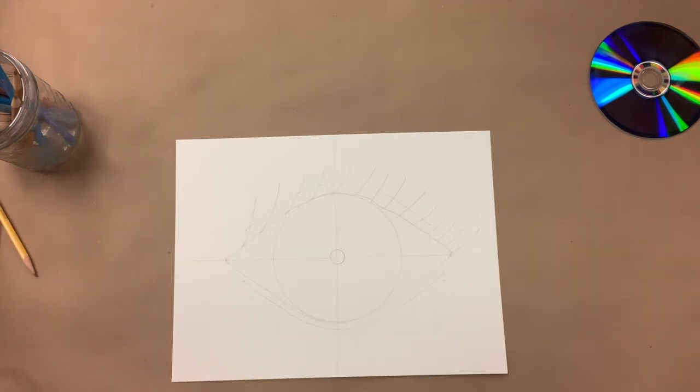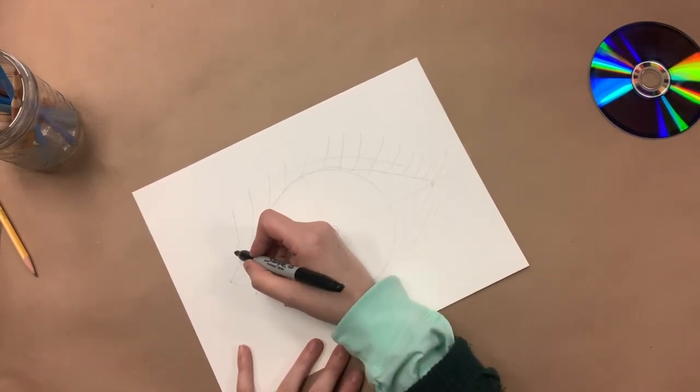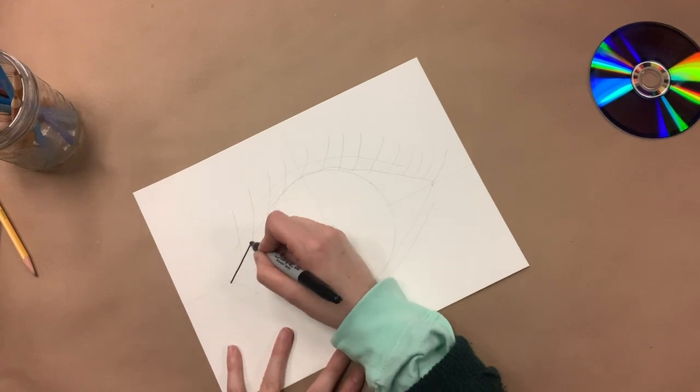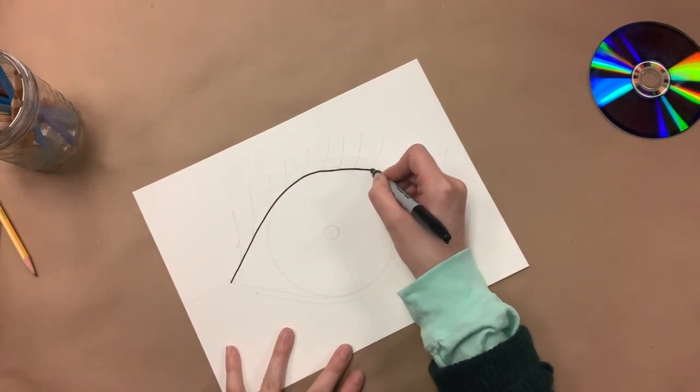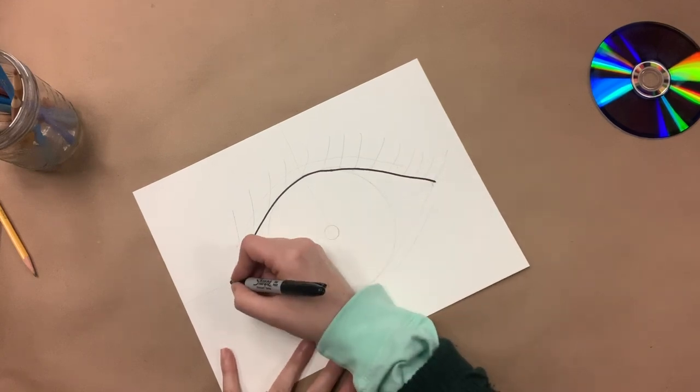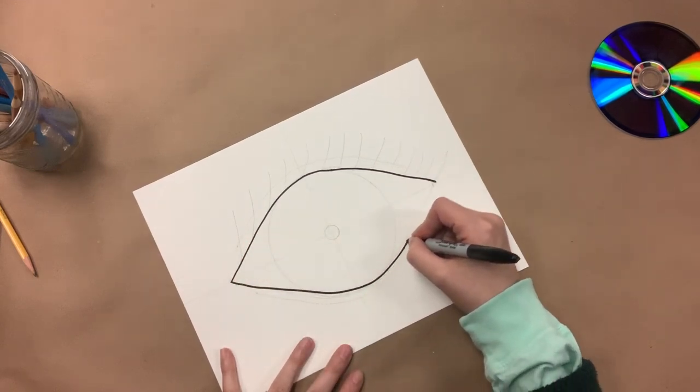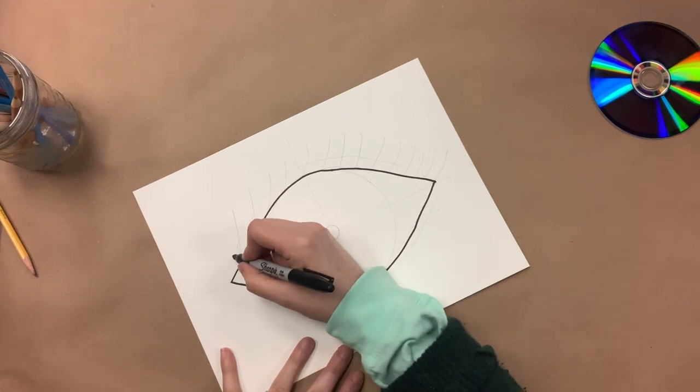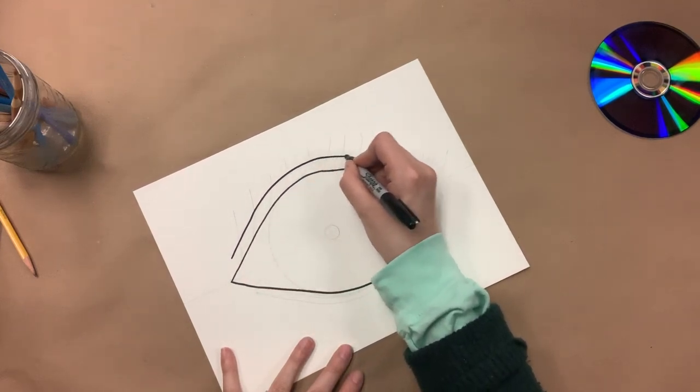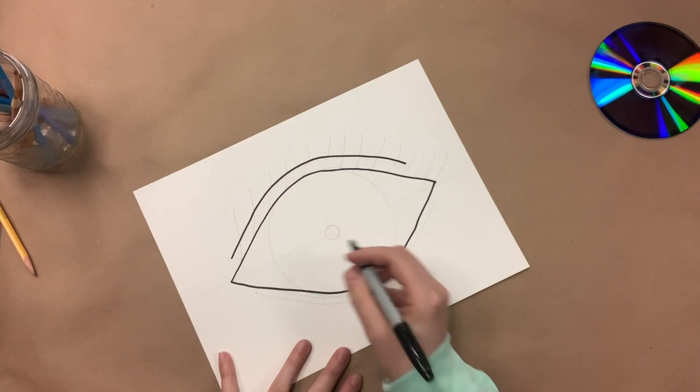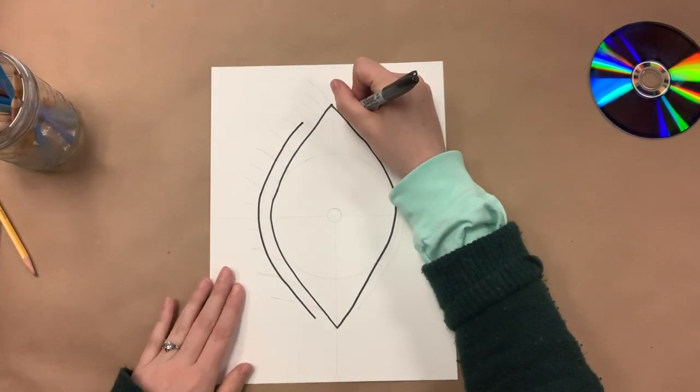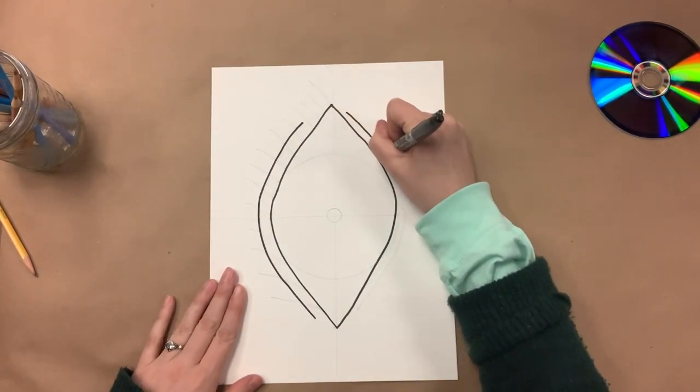The next thing we're going to do now that we have our eye shape is we are going to outline it with a black marker. I have a Sharpie. If you don't have a Sharpie, but you have a black magic marker, that's fine. When you're outlining, if you're not perfect with your pencil lines, that's totally fine. As I said in the beginning, we're going to draw lightly. That way if we mess up or if we don't get it perfect, we can just erase them.